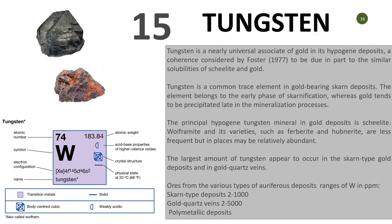Number fifteen is tungsten. Tungsten is actually nearly invisible in many occurrences, but it is one of the things that can signal you when you see it in your soil sample. It is a common trace element in gold-bearing skarn deposits especially. The element belongs to the early phase of skarnification, whereas boron tends to be present late in the mineralization process. The largest amounts of tungsten appear to occur in skarn-type deposits and in gold quartz veins. Tungsten is also called wolfram and varies from deposit to deposit.